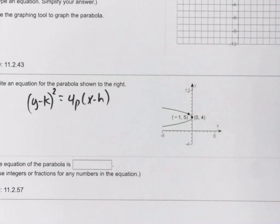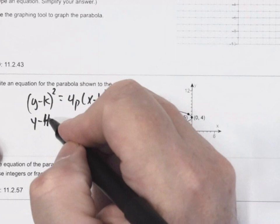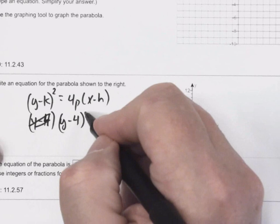So I know the vertex, but it gives me h and k. So the vertex is (0, 4). So 0 is h, k is 4.